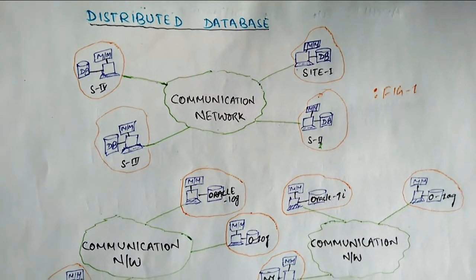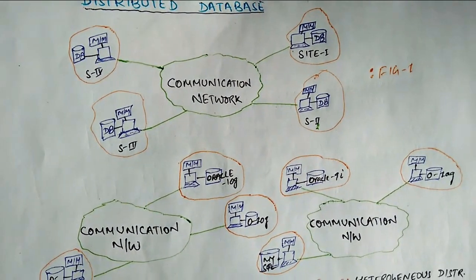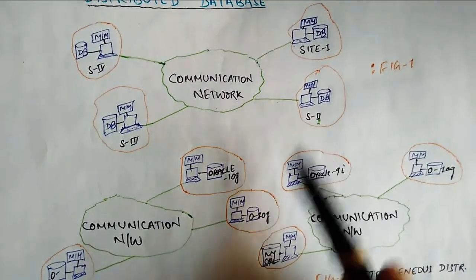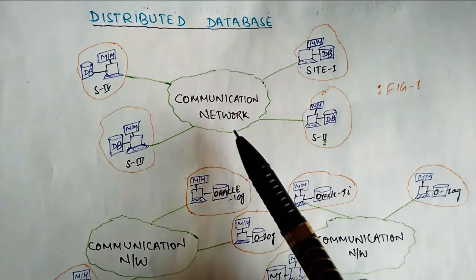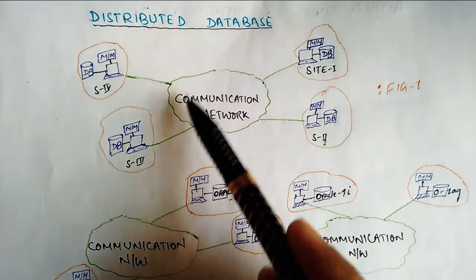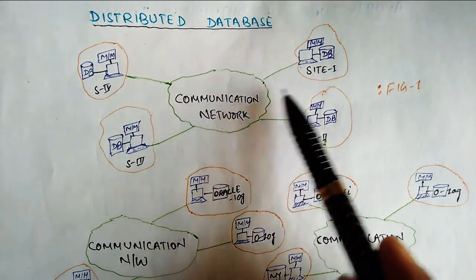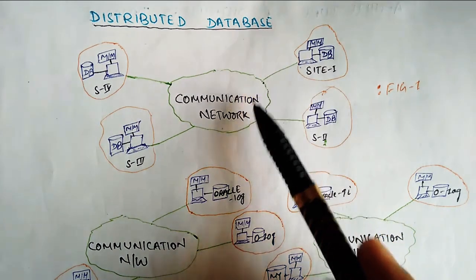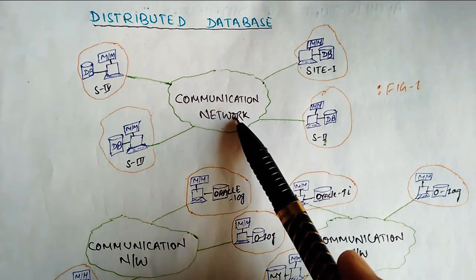Here we have three diagrams for distributed database: Figure 1, Figure 2, and Figure 3. In Figure 1, we have a communication network, and there are several sites connected to this network.